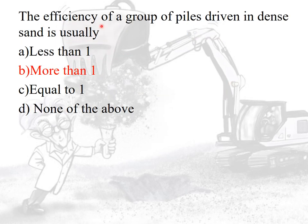The efficiency of a group of piles driven in dense sand is usually greater than one. Sometimes instead of dense sand, the term cohesionless soil may be used. For cohesive soil or clay, the efficiency of the group of piles is less than one.